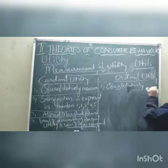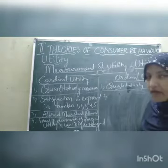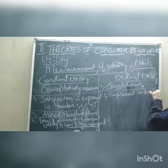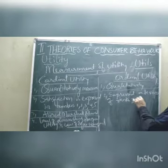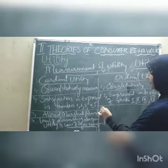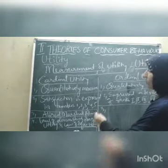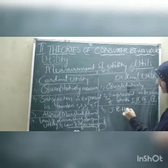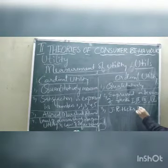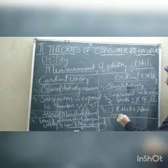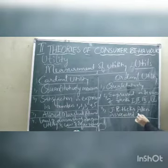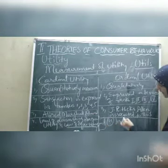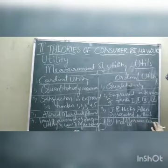Ordinal utility is not measured in quantity; it is measured in quality and expressed in terms of ranks — first, second, third, fourth. The economists associated with ordinal utility are J.R. Hicks and Allen. These two economists are closely associated with ordinal utility. The theory that depends on ordinal utility is indifference curve analysis.